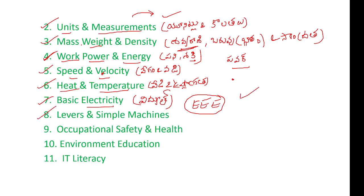Next, the eighth unit: levers — nothing but simple machines. There are three types of levers. One: a force has to act on an object at a fulcrum, and another force is applied. Simple machines and complex machines are based on these lever principles. These concepts relate to mechanical engineering basics.